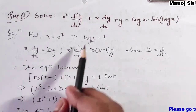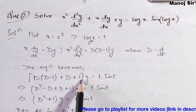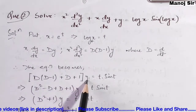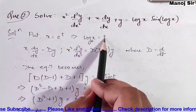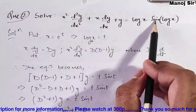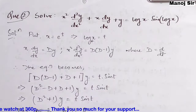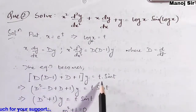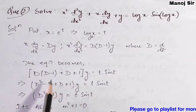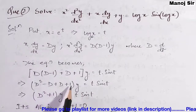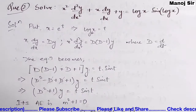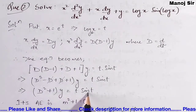The equation becomes D(D−1)y + Dy + y = t·sin(t), since log(x) = t. Taking y common: [D(D−1) + D + 1]y = t·sin(t). Opening the bracket gives D² − D + D + 1, so the D terms cancel, leaving (D² + 1)y = t·sin(t).